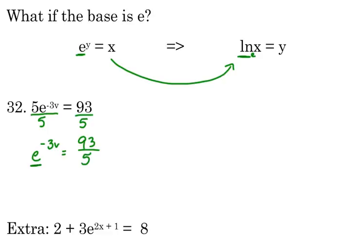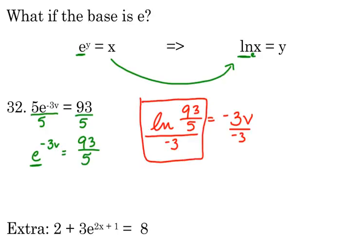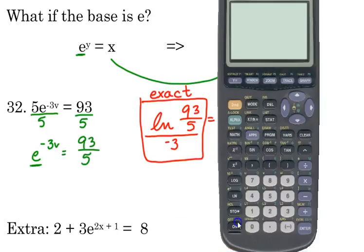Now it's base E, so we're going to rewrite this using the natural log. So we have the natural log of 93 over 5 is equal to negative 3V. And we divide both sides by negative 3. It's the entire natural log expression divided by 3. So this is our exact answer in logarithmic form, but let's find out what its decimal approximation is so we can compare it to what those of you who did it on Friday got.